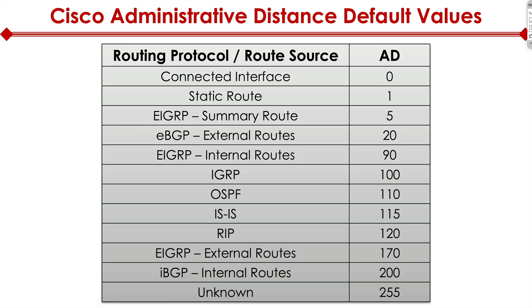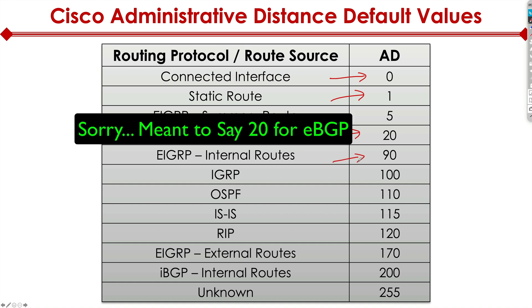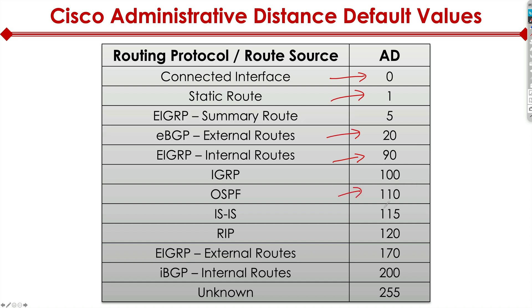Now let's quickly take a look at the administrative distance table and its default values. A connected interface has an administrative distance of 0. A static route has an AD of 1. EBGP has an administrative distance of 20. EIGRP has an AD of 90. OSPF is 110, IS-IS is 115, and RIP is 120.